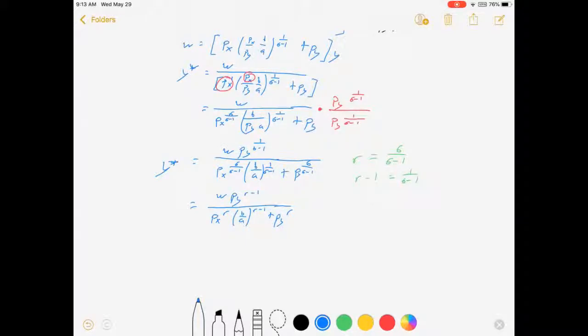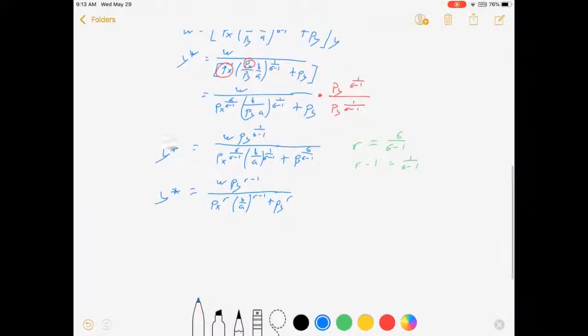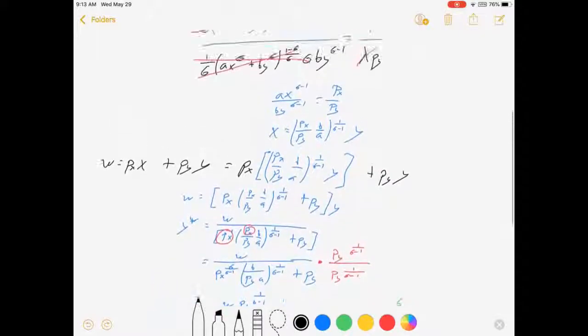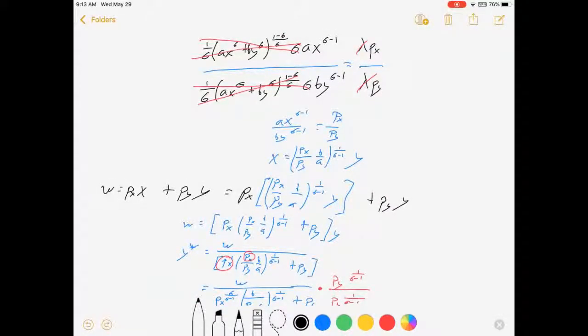Either way, these are our two simplified y stars, and now I can substitute this into my budget constraint to get x. w equals px. Actually, let's not do the budget constraint. We already have a ratio for y to x. And it is here.